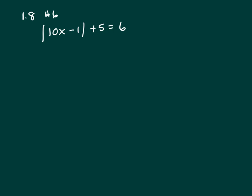This is an absolute value equation because you have an equal mark. The first step to solve is to isolate the absolute value. So that would be the absolute value of 10x minus 1 equals 1.